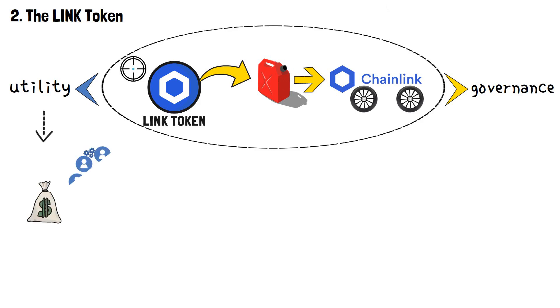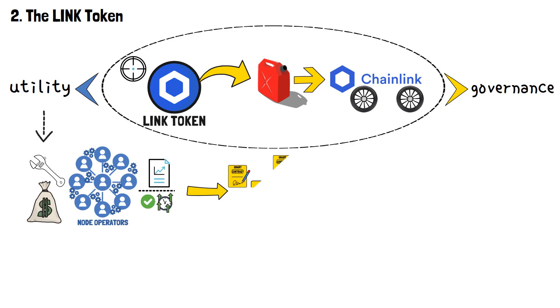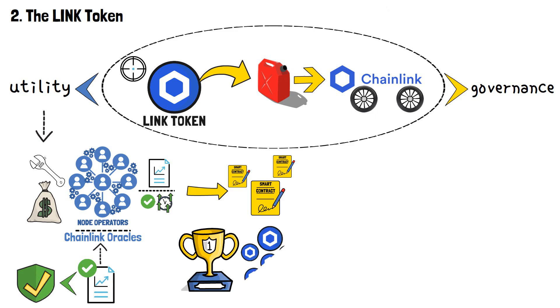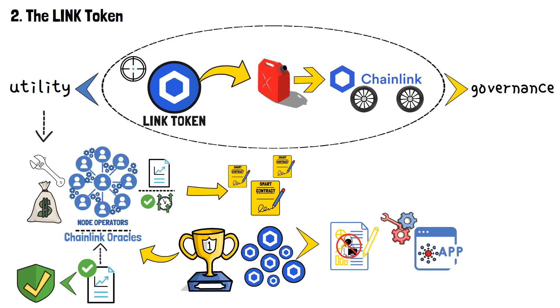LINK tokens are used to compensate node operators for their services in providing accurate and timely data to smart contracts. These nodes, also known as Chainlink oracles, fetch external data and validate it, ensuring that the data integrated into smart contracts is reliable and tamper-resistant. Node operators are rewarded with LINK tokens for their contributions, aligning incentives to maintain data integrity and the seamless operation of decentralized applications.